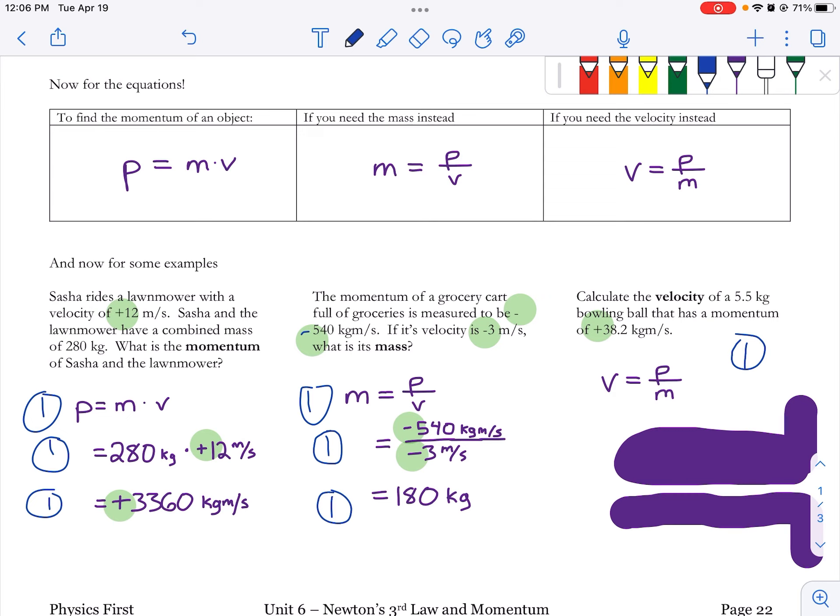I think I'm remembering how this works now. Okay, back to the problem. So I'm going to be dividing the momentum, which is the plus 38.2, by the mass, which is the 5.5. So I've got to write down that that's what I'm going to plug into my calculator.